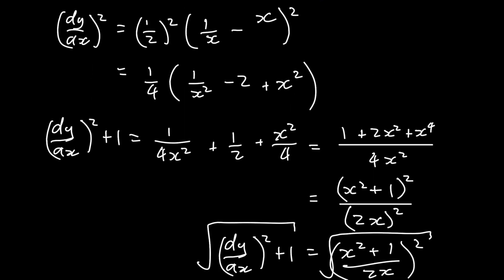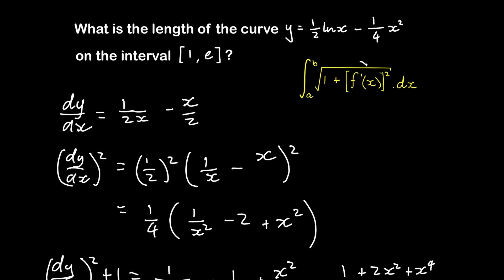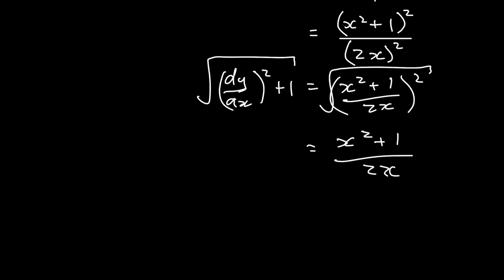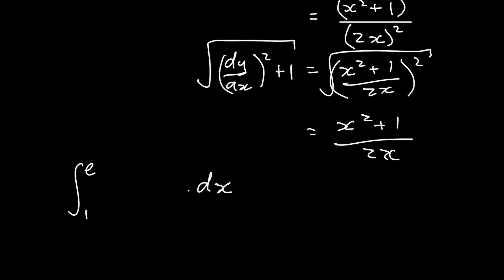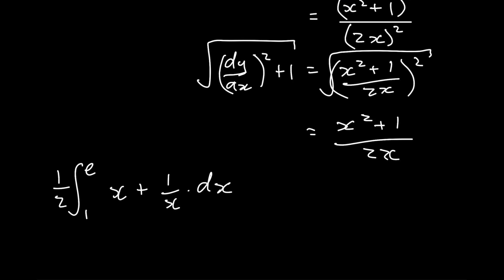But now we're told that we need to do the integral from 1 to e of this function. So the integral from 1 to e of (x² + 1) over 2x dx gives us the arc length of this function between 1 and e. Now, (x² + 1) over 2x is the same as x over 2 plus 1 over 2x, and we can take 1 over 2 out as a common factor.